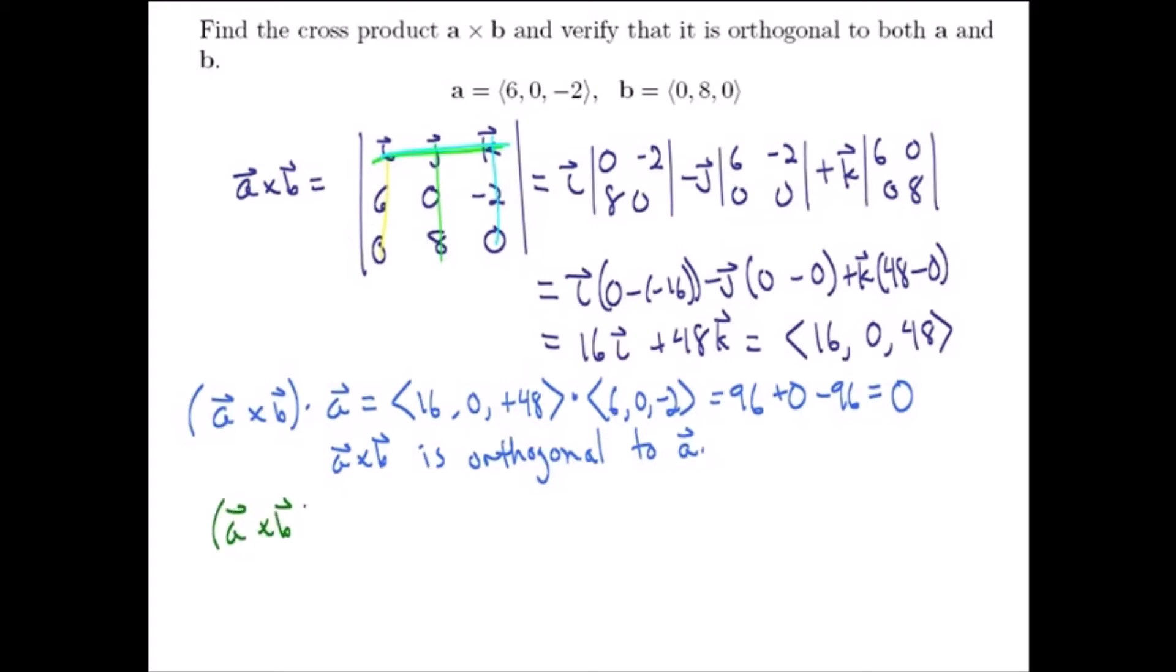So we'll take the dot product of A cross B and the vector B. So that's 16, 0, positive 48, dotted with 0, 8, 0. I can see already we're going to be in business here. 16 times 0 is 0, plus 0 times 8 is 0, plus the product of the third component is 48 and 0. 0 plus 0 plus 0 is all 0. So since the dot product is 0,